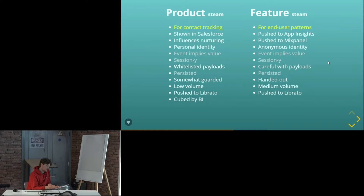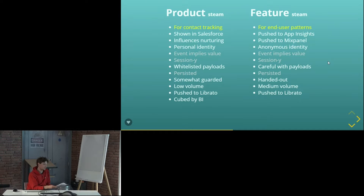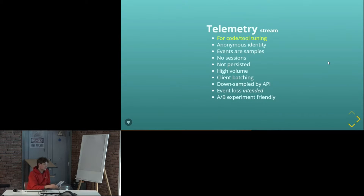Feature usage is more granular, but events here are still intended to indicate people getting value from the tools. It has anonymous identities, so you can still do user behavior analysis — you can ask questions like: do people do X and then Y? Why don't they do Z afterwards? You can follow the journey, but you don't get to know the exact contacts involved. Telemetry is super new and is intended to allow a much higher volume of data to be submitted. Events don't necessarily need to be tied to user value — the point is to help teams form metrics to tune their tools in a more technically focused manner.